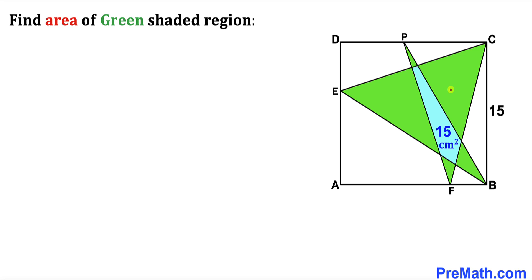We can see that the green shaded region consists of several sub-regions. Let me label these regions: I'll call them lowercase a, b, c, d, and e. I'll also label the white triangular region as x, the blue region as y, and the remaining region as z.